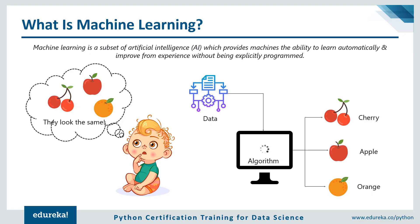Machine learning is the science of getting computers to act by feeding them data and letting them learn a few tricks on their own without being explicitly programmed. This sounds a lot like a human child. As a child, if you had to distinguish between fruits such as cherries, apples, and oranges, you wouldn't even know where to start because you're not familiar with how the fruits look. But as we grow up, we collect more information and start developing the capability to distinguish between various fruits.